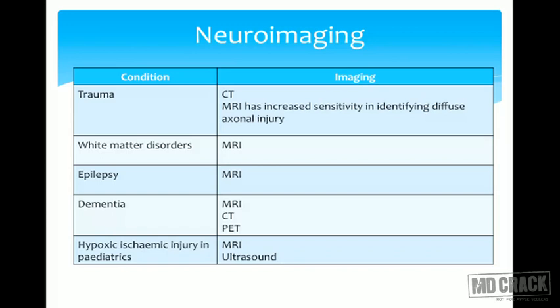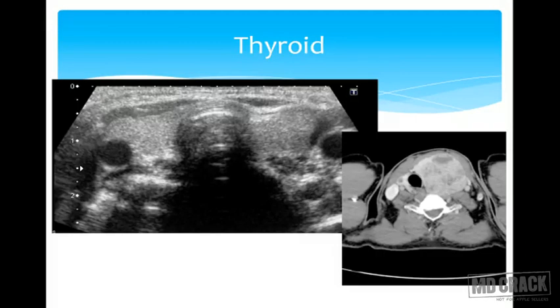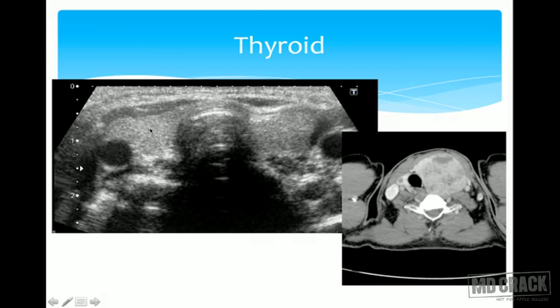For hypoxic-ischemic injury in neonates, MRI may be performed, but ultrasound is excellent for detecting subependymal hemorrhage. Moving to head and neck lesions: ultrasound of the thyroid shows the right lobe, left lobe, isthmus, and overlying trachea. For evaluating thyroid nodules and salivary glands, ultrasound is the modality of choice.